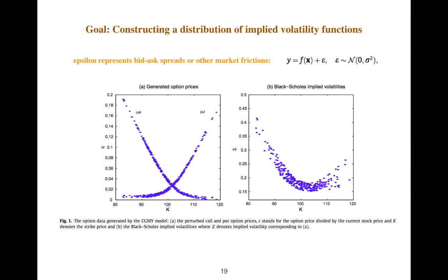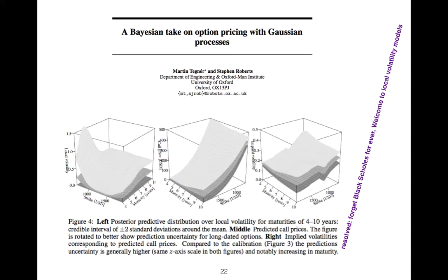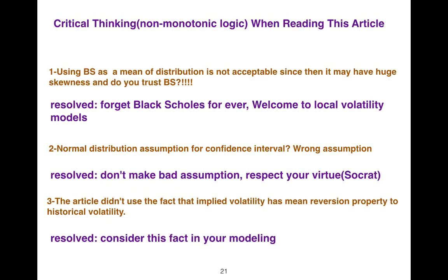The result is as follows. But critical thinking allows us to understand—using Black-Scholes as a mean of distribution is not acceptable since it may have huge skewness.